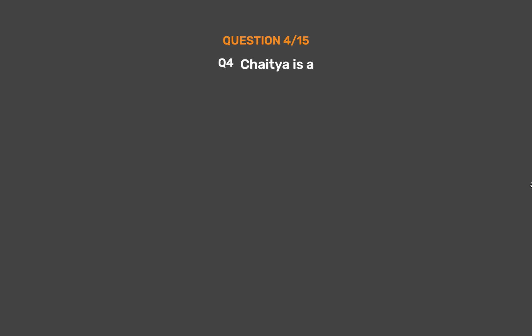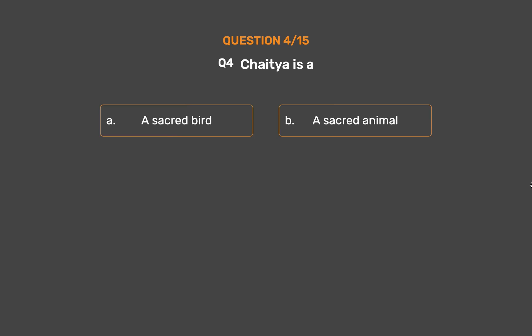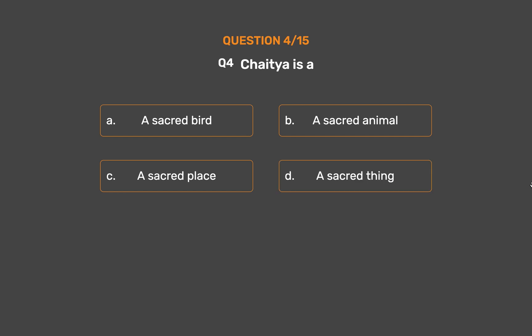Question No. 4. Chaitya is: Option A: A sacred bird. Option B: A sacred animal. Option C: A sacred place. Option D: A sacred thing.